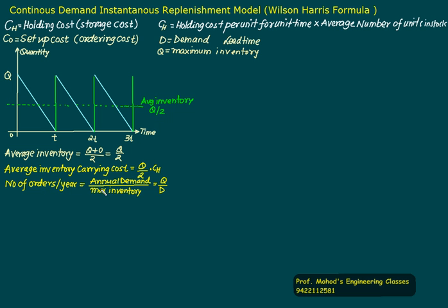Number of orders per year is annual demand upon maximum inventory, that is D by Q. Annual order cost will be number of orders multiplied by cost per order, that is D by Q multiplied by CO. We will show...